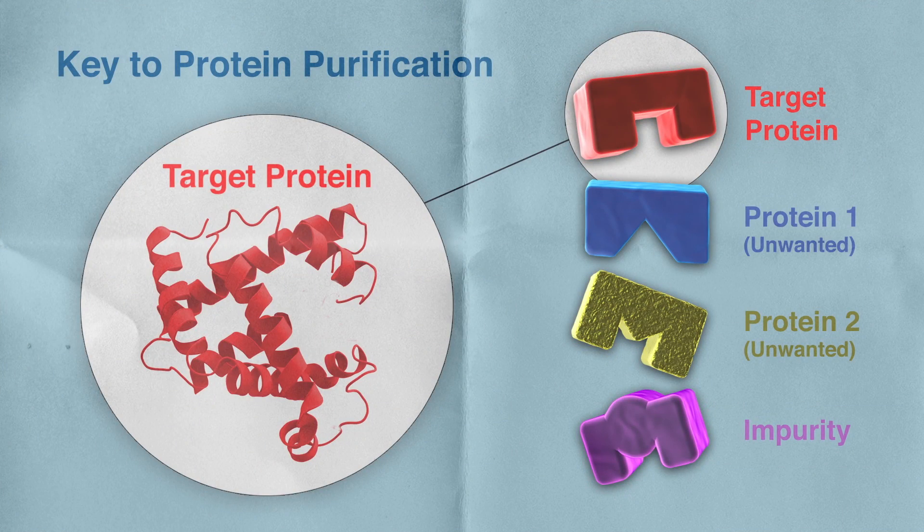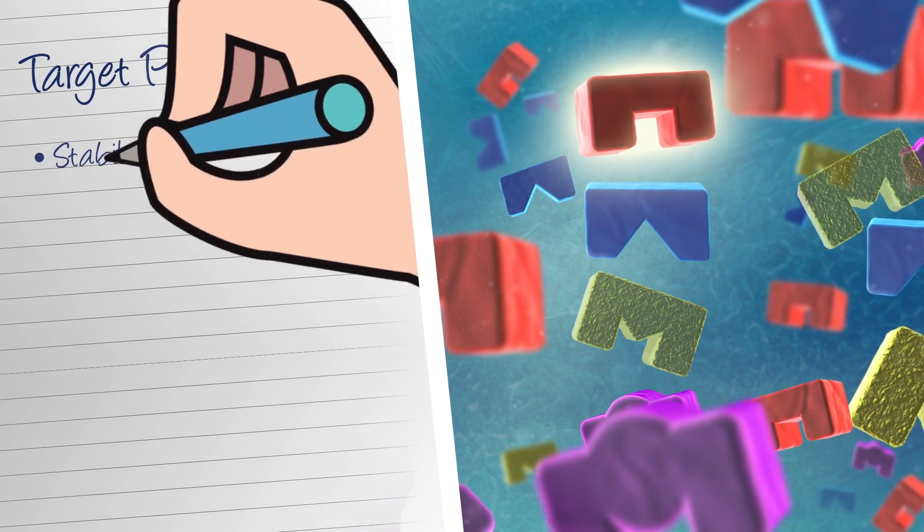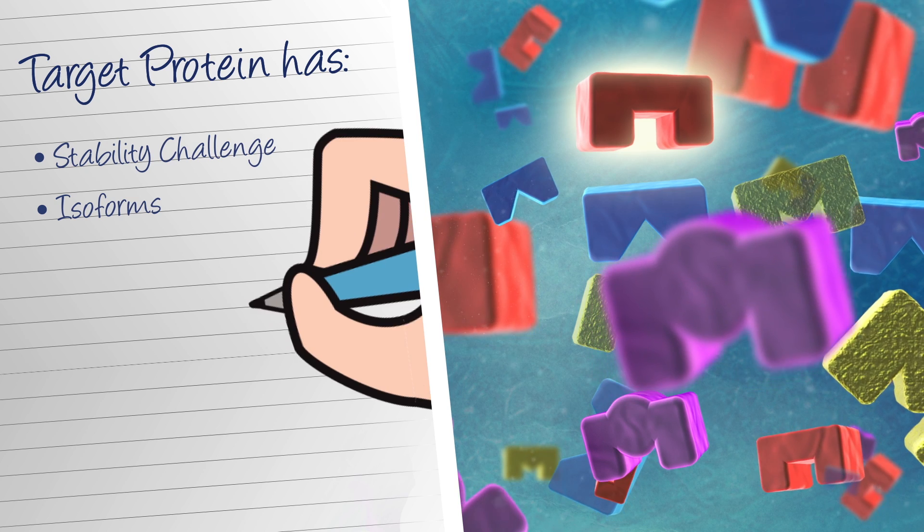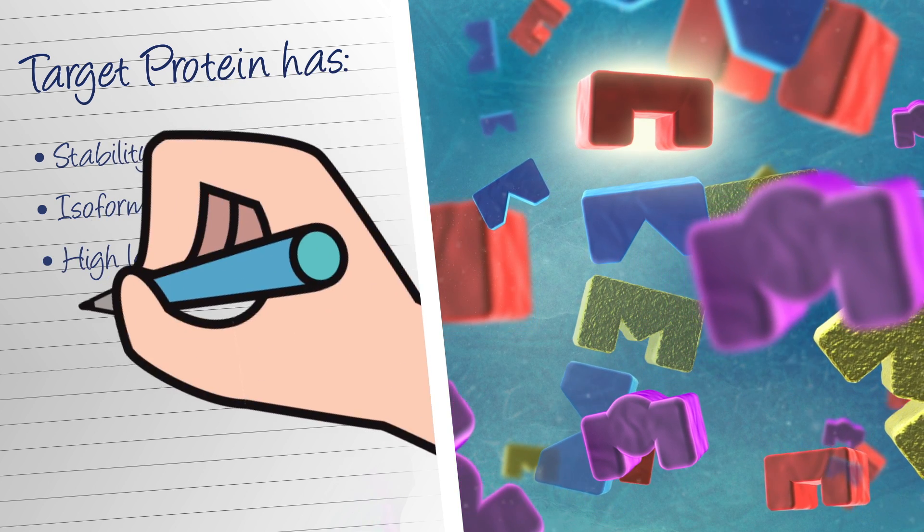Protein purification can be especially difficult for Mike when the target protein is unstable during purification, has isoforms, or needs to be purified from a complex mixture containing a high level of process impurities.